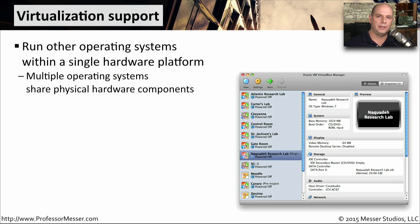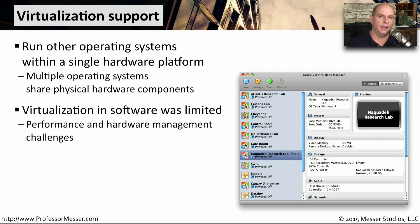A technology that has revolutionized the data center is virtualization — a way that we can run different operating systems on a single physical device. This means we don't have to have multiple computers all doing different things; we can combine all of those capabilities into a single physical box. We realized early on that running virtualization in software had some inherent performance limitations. By moving a number of virtualization functions into the hardware of the CPU, we were able to improve overall performance across all virtual machines.